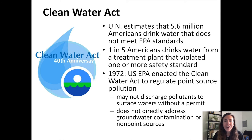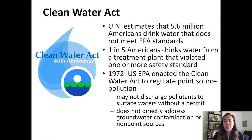Millions of Americans still drink water that's below EPA standards. The Clean Water Act, originally passed in 1972 as the Federal Water Pollution Control Act, regulates mostly only point source pollution — you cannot discharge pollutants into surface waters without a permit from the US government, but non-point sources are not regulated by this act. As a result, surface waters and groundwater are still contaminated by non-point sources, and violations of the Clean Water Act happen regularly.